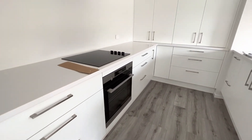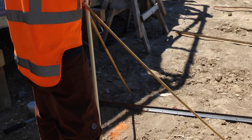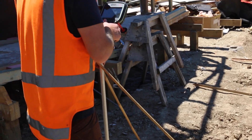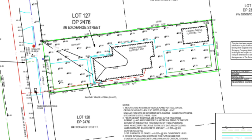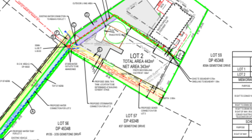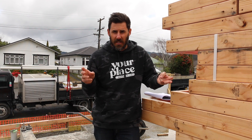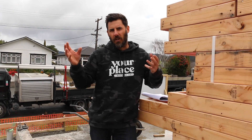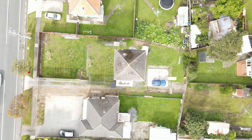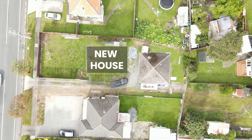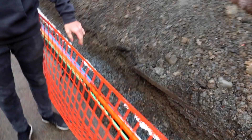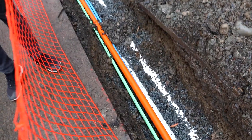A couple of other things we might need: a topographical survey, a scheme plan of the site, and we might need a resource consent which uses those two things. If you're doing a subdivision you'll also need a plan for the services.